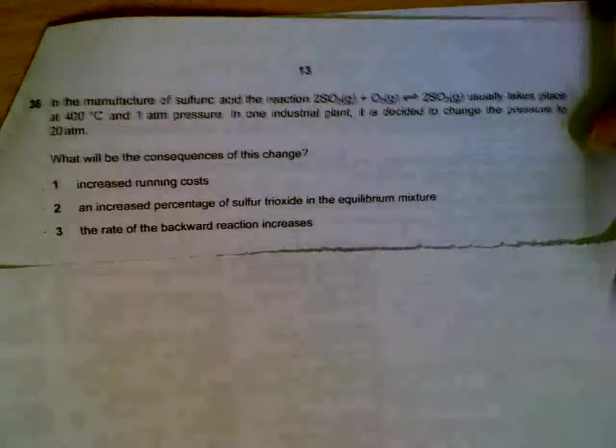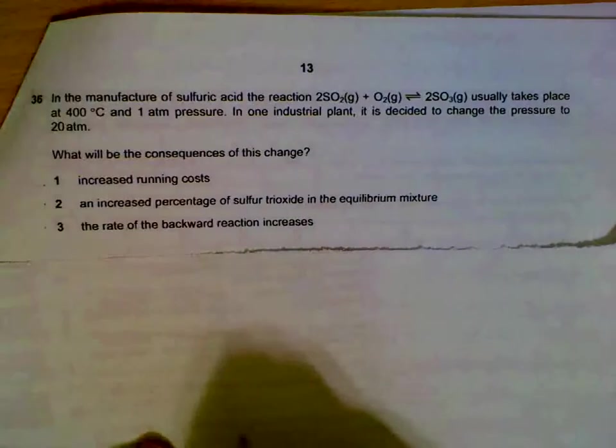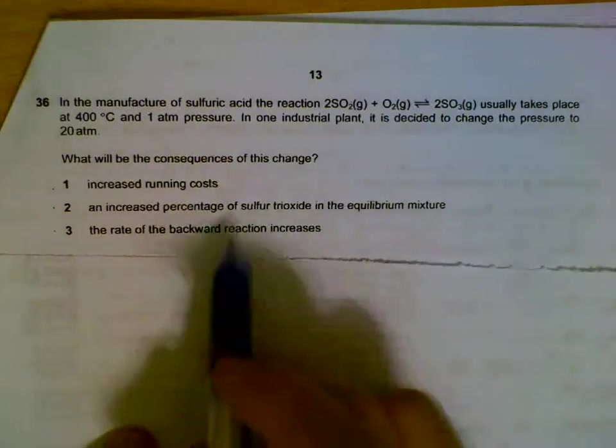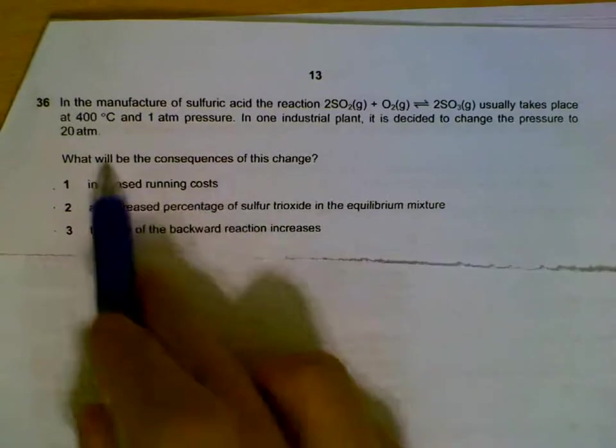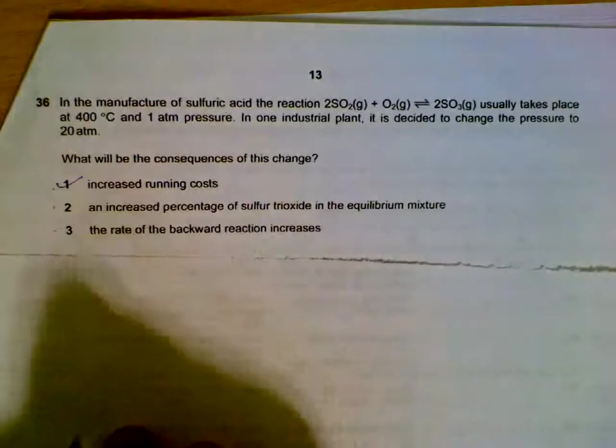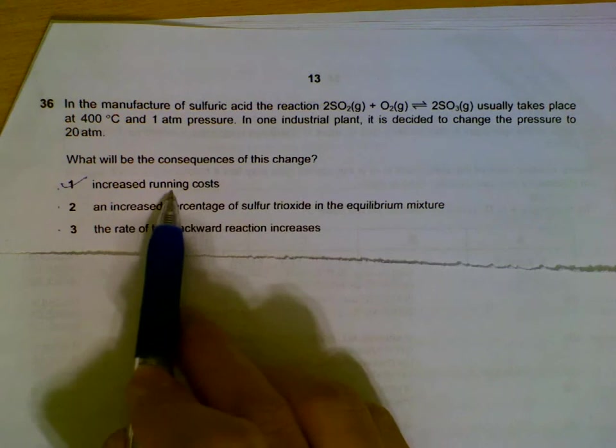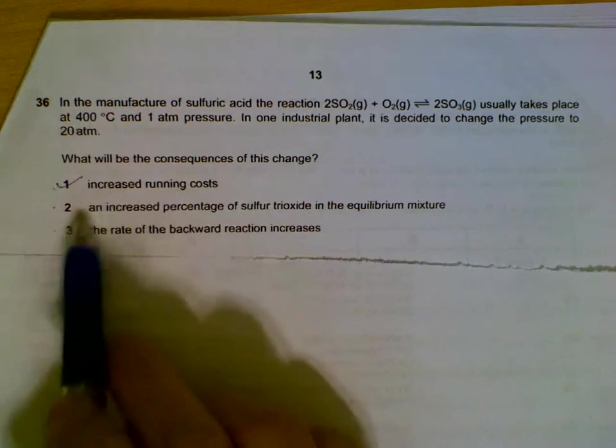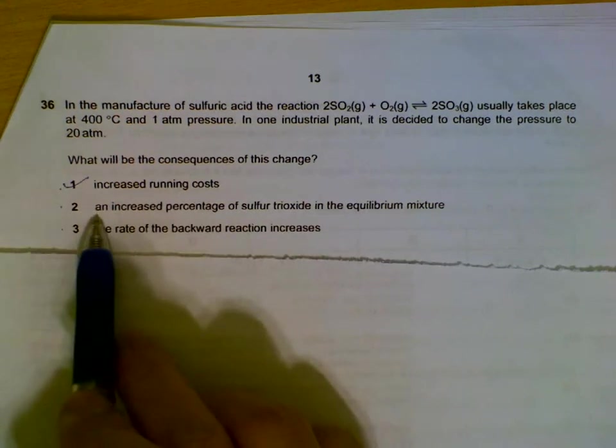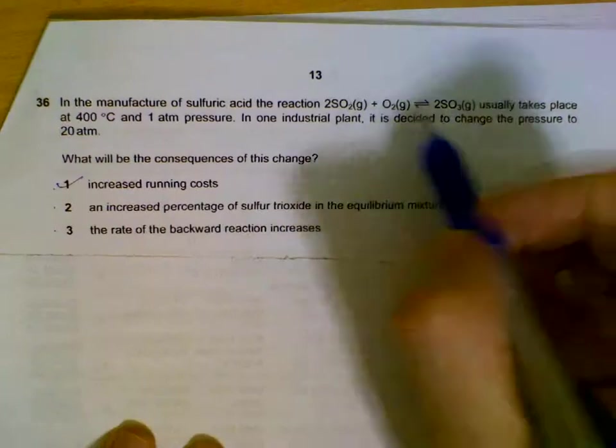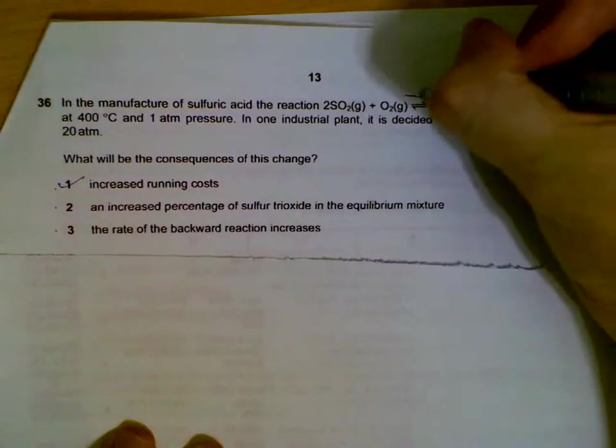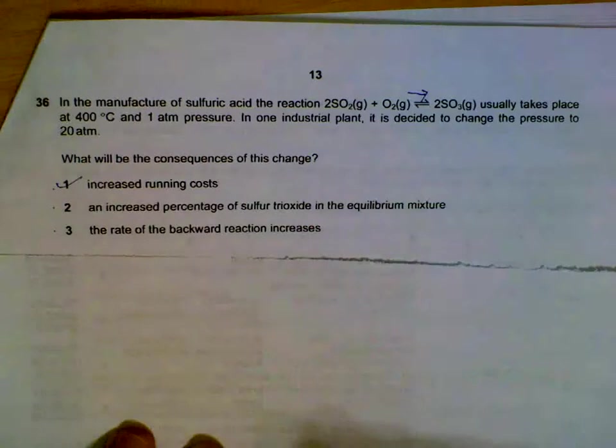Question 36: Sulfur dioxide becomes sulfur trioxide. If we increase the pressure, what will be a consequence? Increasing the pressure will increase running cost—you need more expensive machineries.